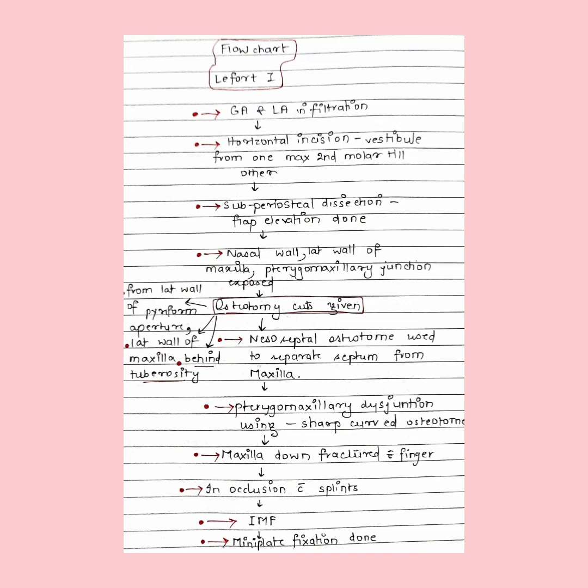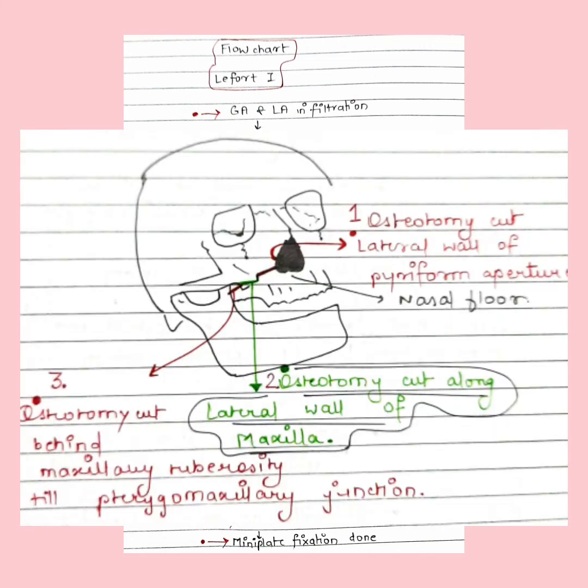Subperiosteal dissection and flap elevation is done to expose the nasal wall, lateral wall of maxilla, and pterygomaxillary junction. Osteotomy cuts are given extending from the lateral wall of pyriform aperture to the lateral wall of maxilla, then going behind the maxillary tuberosity until the pterygomaxillary junction.